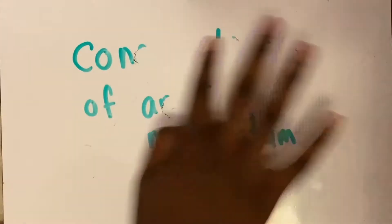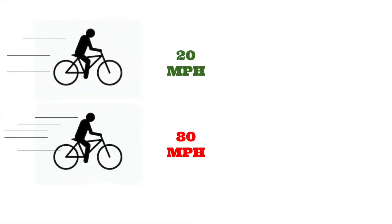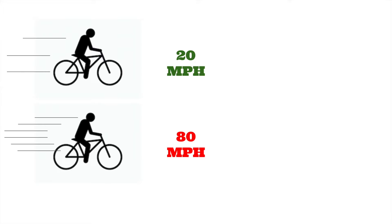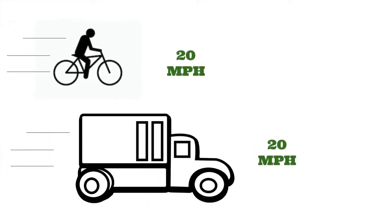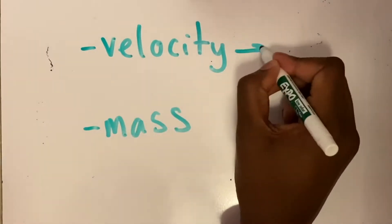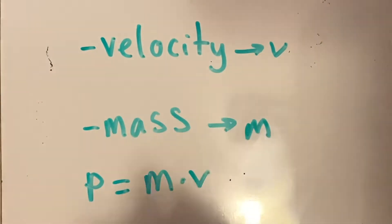What is conservation of angular momentum? Well, to answer that question, first we need to look at regular momentum, which can be thought of as how hard it is to stop an object that's moving. Think of a bike going at 20 miles per hour and then a bike going at 80 miles per hour — which is harder to stop? The one going at 80 miles per hour, obviously, because it's moving a lot faster. So an object's momentum is related to its velocity. Now think of a bike moving at 20 miles per hour and a truck moving at 20 miles per hour. The truck is a lot harder to stop because it's a lot bigger, so mass affects momentum as well. People call the velocity v and the mass m, and say that p, the momentum, is equal to the mass times the velocity.